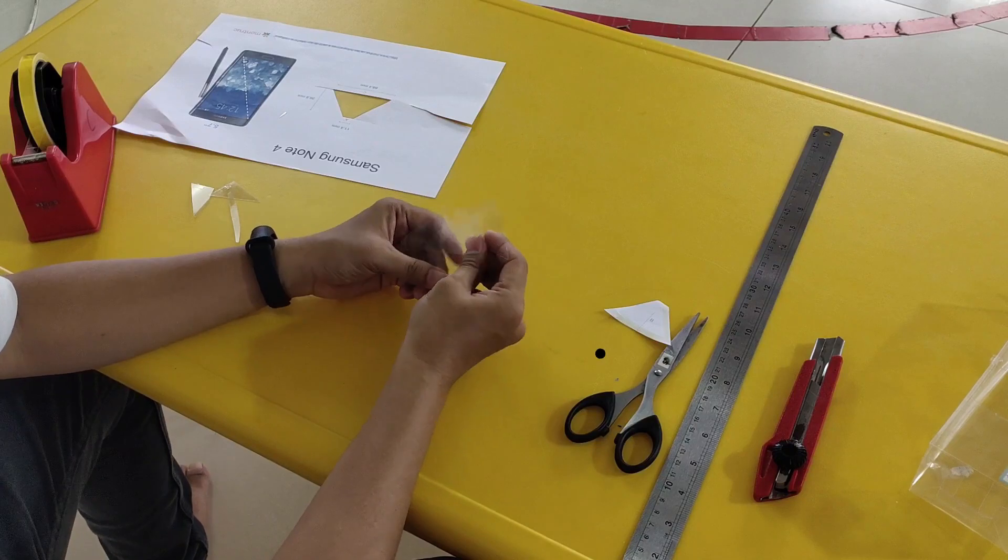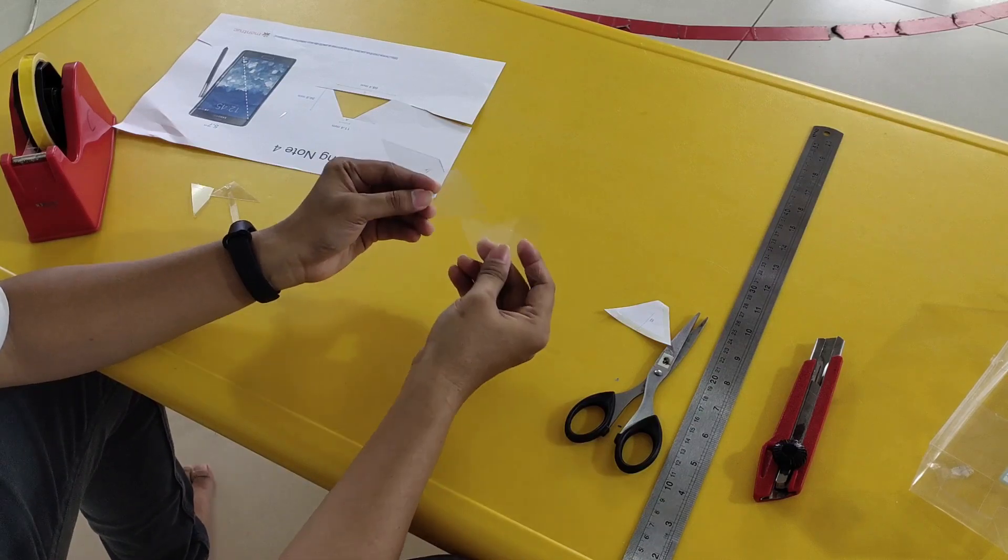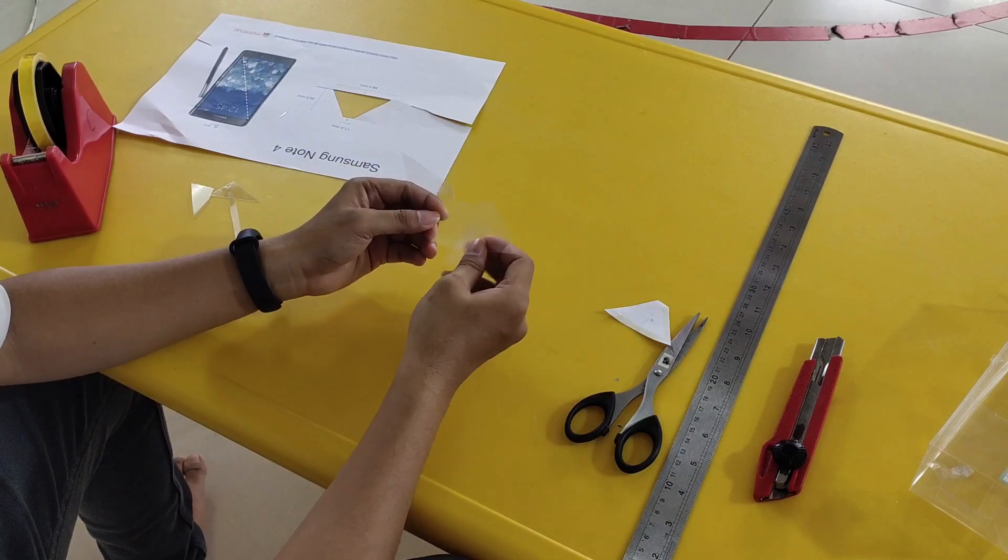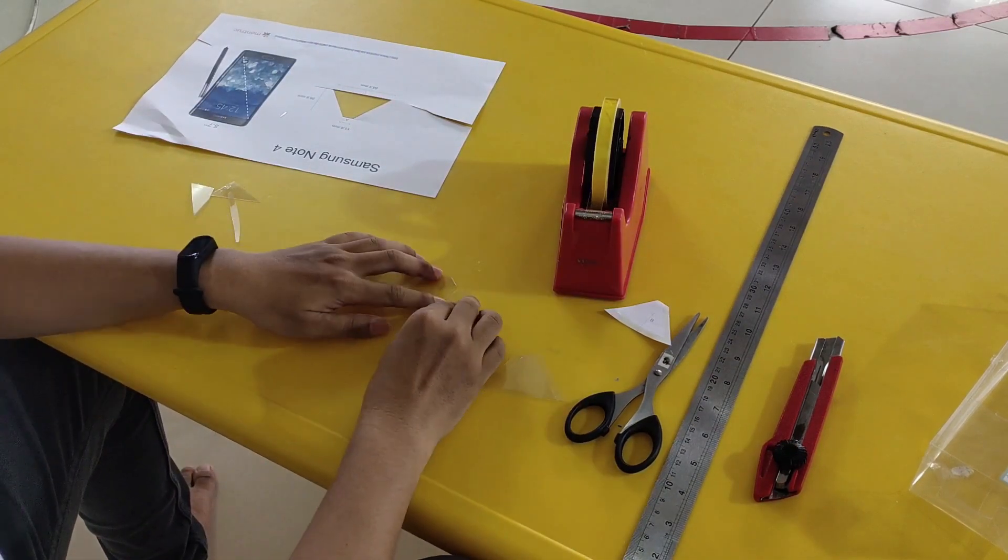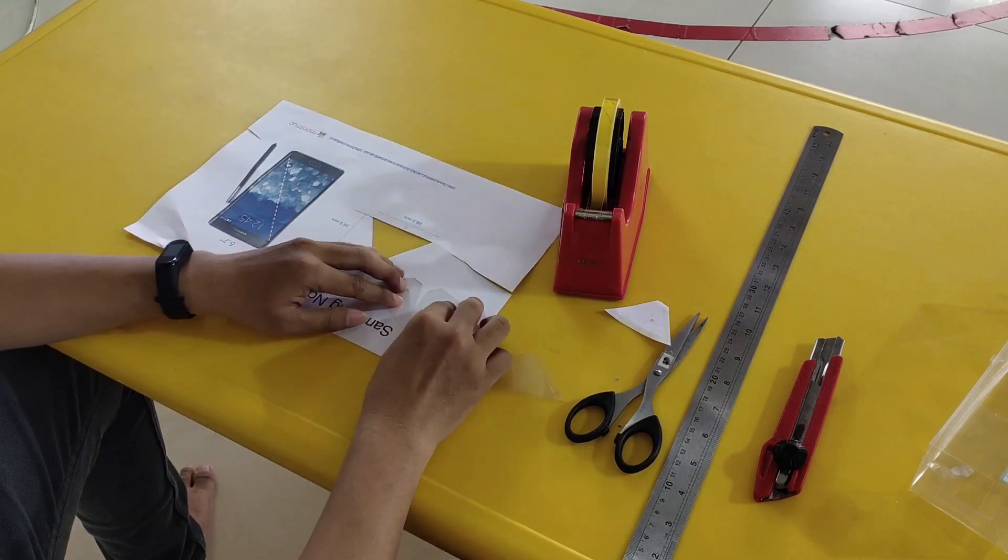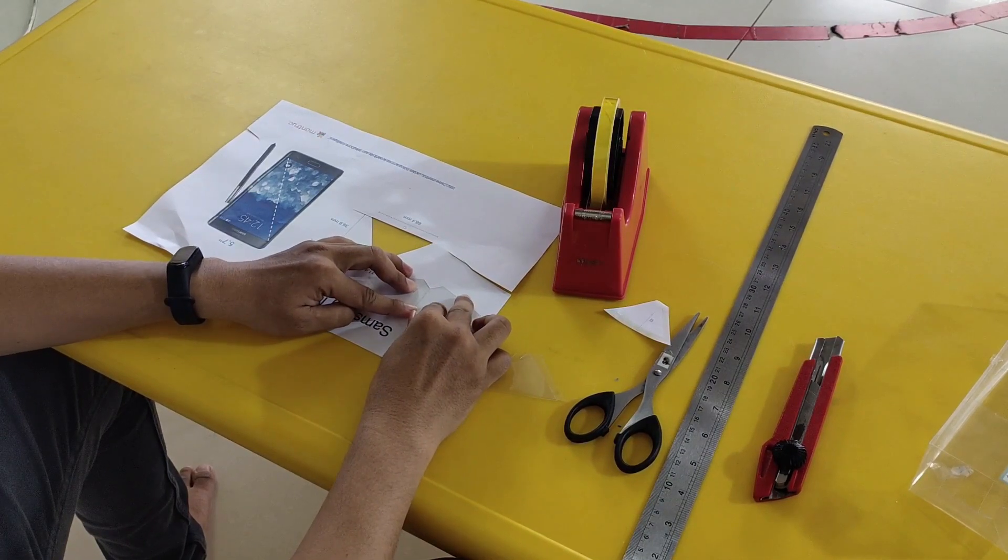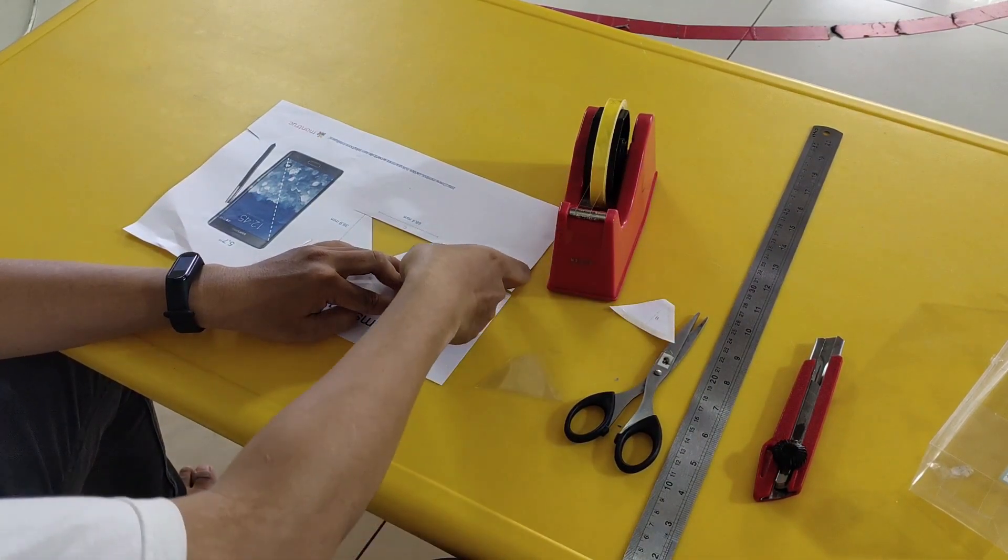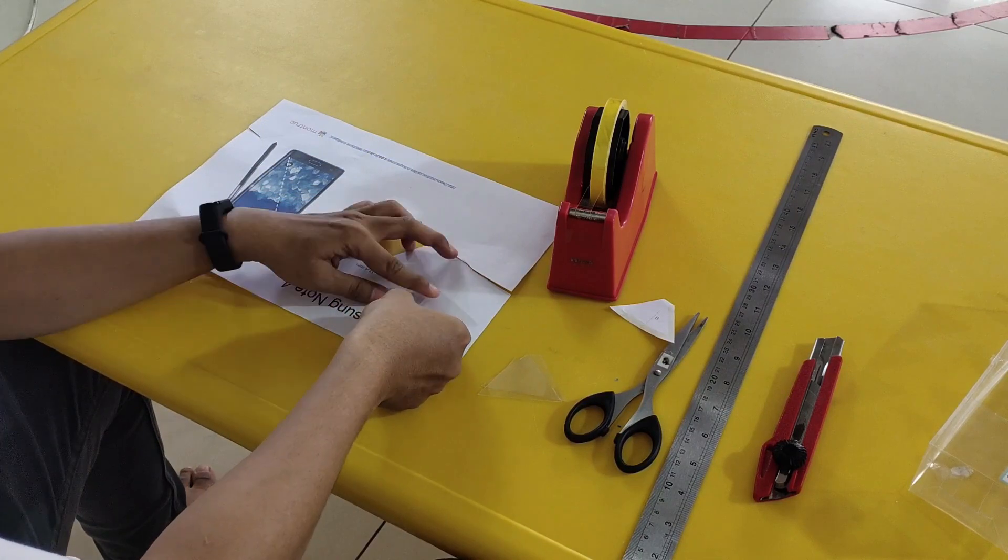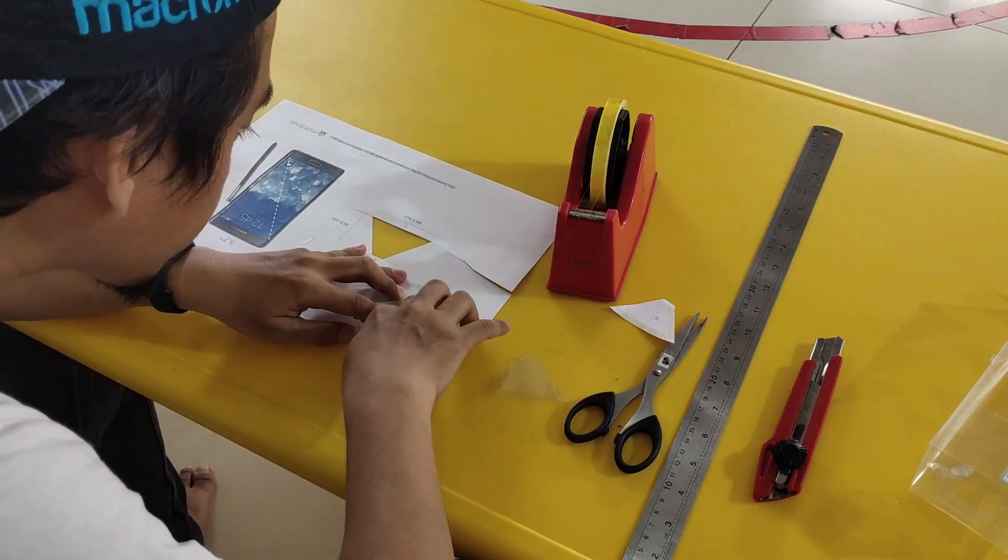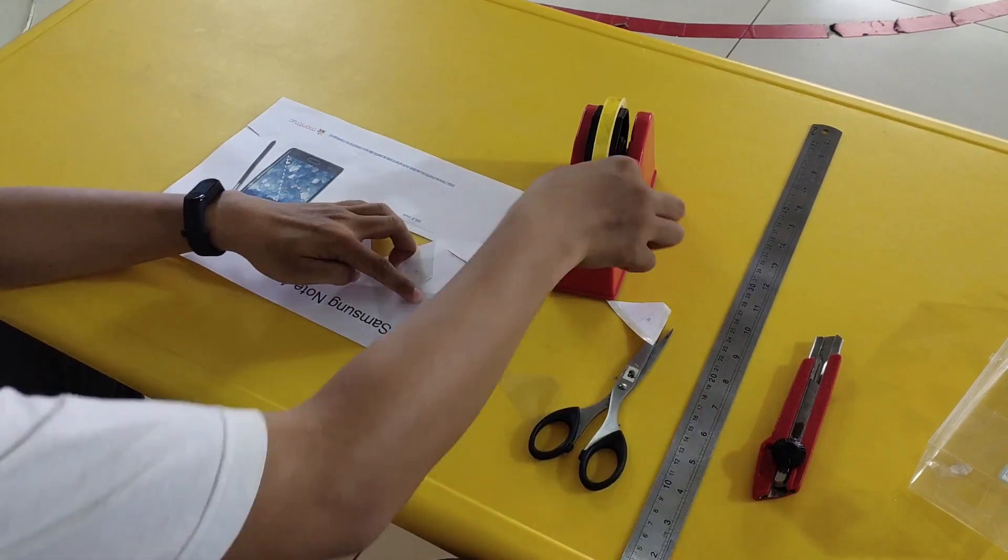Now we have four sides of the shapes. Now we are going to form a pyramid by using the shapes. How? We are going to use tape. Let's tape it one by one. Tape it one by one from the side. Tape one side with the other side.